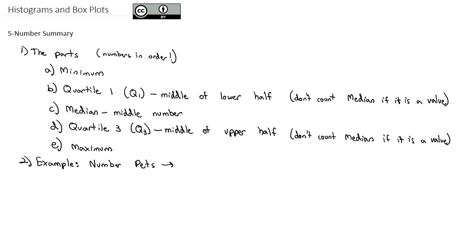We might get a data set that looks like this: 0, 1, 1, 2, 2, 3, 3, 4, 5, and 11. Notice these are already in order. Remember, the numbers must be in order first before we actually find the parts of these five-number summaries.